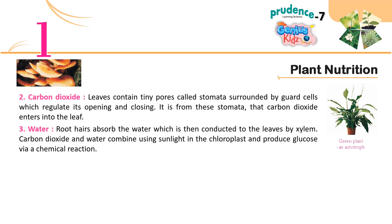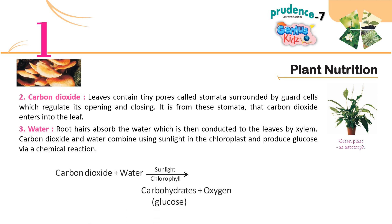Water: Root hairs absorb water, which is then conducted to the leaves by xylem. Carbon dioxide and water combine using sunlight in the chloroplast and produce glucose via a chemical reaction. The equation is: Carbon dioxide + Water → (sunlight, chlorophyll) → Carbohydrates (glucose) + Oxygen.